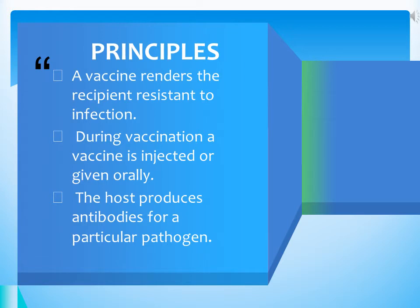Let's talk about the principles of vaccination. A vaccine renders the recipient resistant against an infectious agent. During the vaccination process, a particular causative agent's antigen is injected in the form of a vaccine, or given orally, to the host body — but in an attenuated or weakened form, so that it can only render antigenicity but not pathogenicity. As a result, the host gradually produces antibodies against that particular pathogen responsible for causing disease.